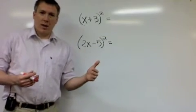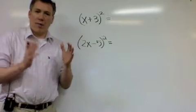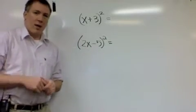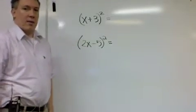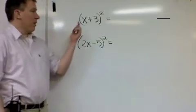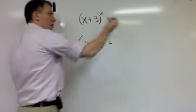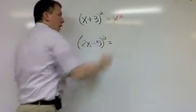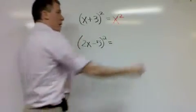Now we could FOIL it out, but there is a shorter method that you can use. We've done this a couple times this year, see if you can remember. You start by squaring the first term, so x squared, and squaring the last term, 9.